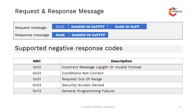Conditions Not Correct (0x22) is sent back by the ECU if the vehicle is not in a stable condition — for example, if the vehicle is moving or there is another scenario where the ECU is not able to respond. The same applies to Request Out of Range (0x31): for example, if a particular memory location is read-only and you are trying to write data into it, the ECU will indicate that memory location is not available for writing.